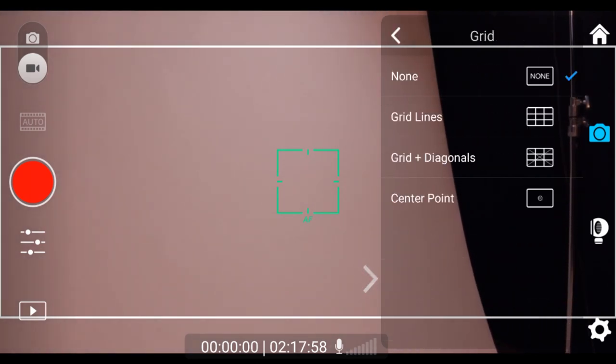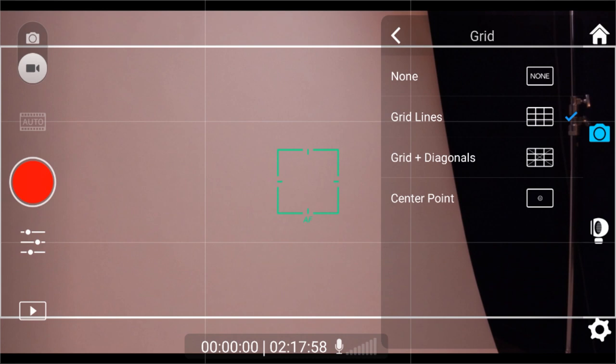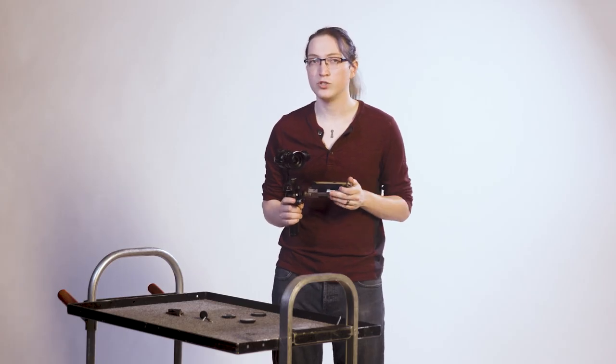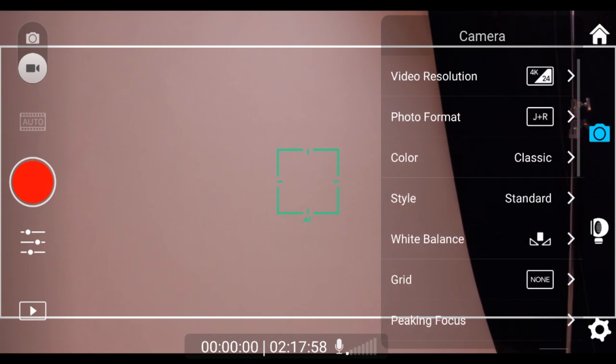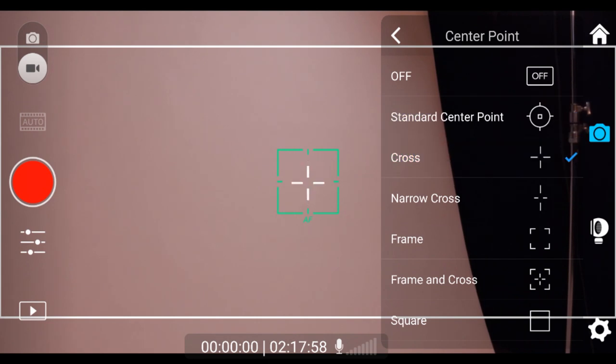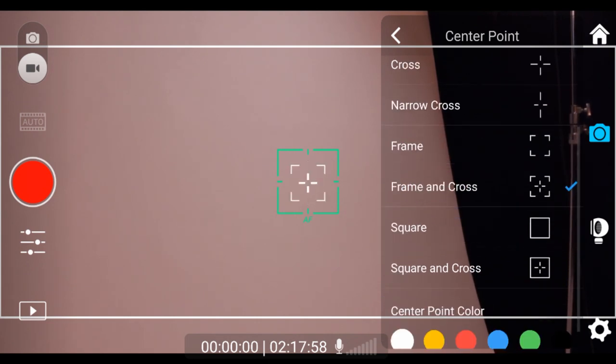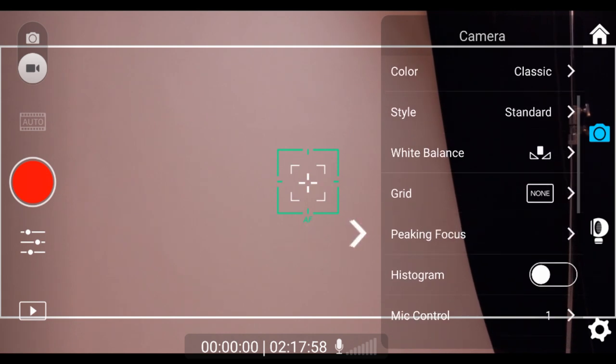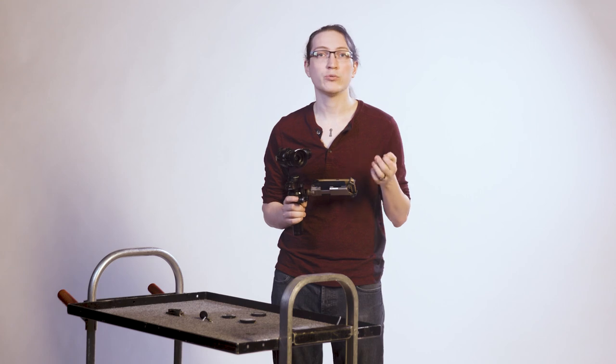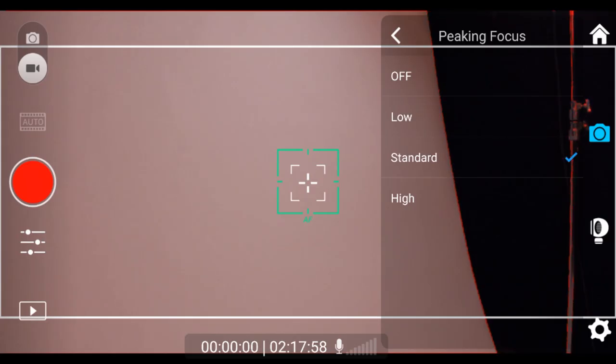The grid and focus peaking are helpful tools for framing and manually pulling focus. The grid will offer you options for a rule of thirds grid, with or without diagonals, as well as a center point option. These will be helpful when framing a shot or tracking a subject, so that you can keep framing consistent. You have additional options for center point further down in the menu. There you will be able to adjust the look of the crosshairs and the color. Focus peaking will outline the in focus areas of your image in red, so that you are easily able to identify what is and isn't in focus. You will have three strength options of low, standard, and high.